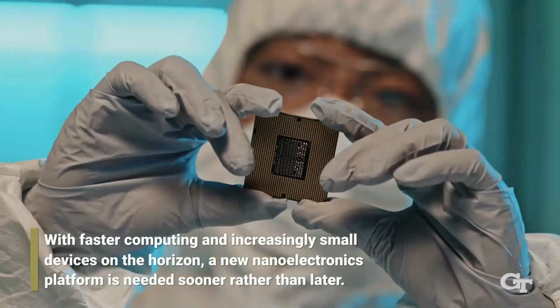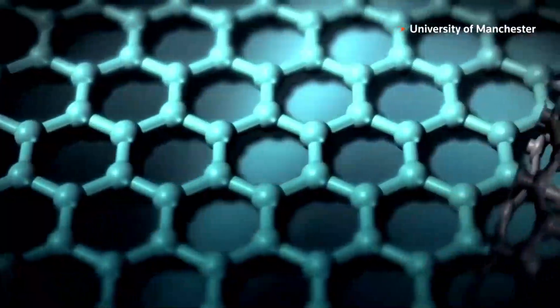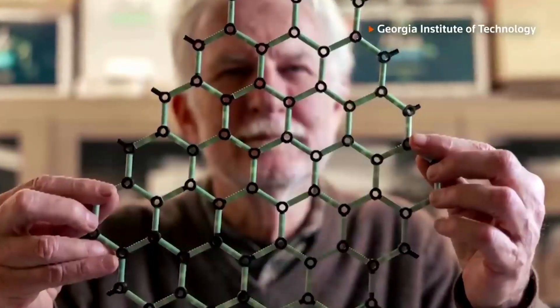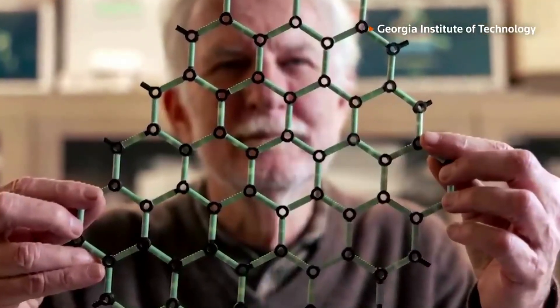With 10 times the mobility of silicon, this innovation offers a substitution for silicon which is reaching its limits in contemporary electronics. Because of its spatial qualities, such as its resilience and capacity to withstand high currents without overheating, graphene is perfect for use in electronic applications.